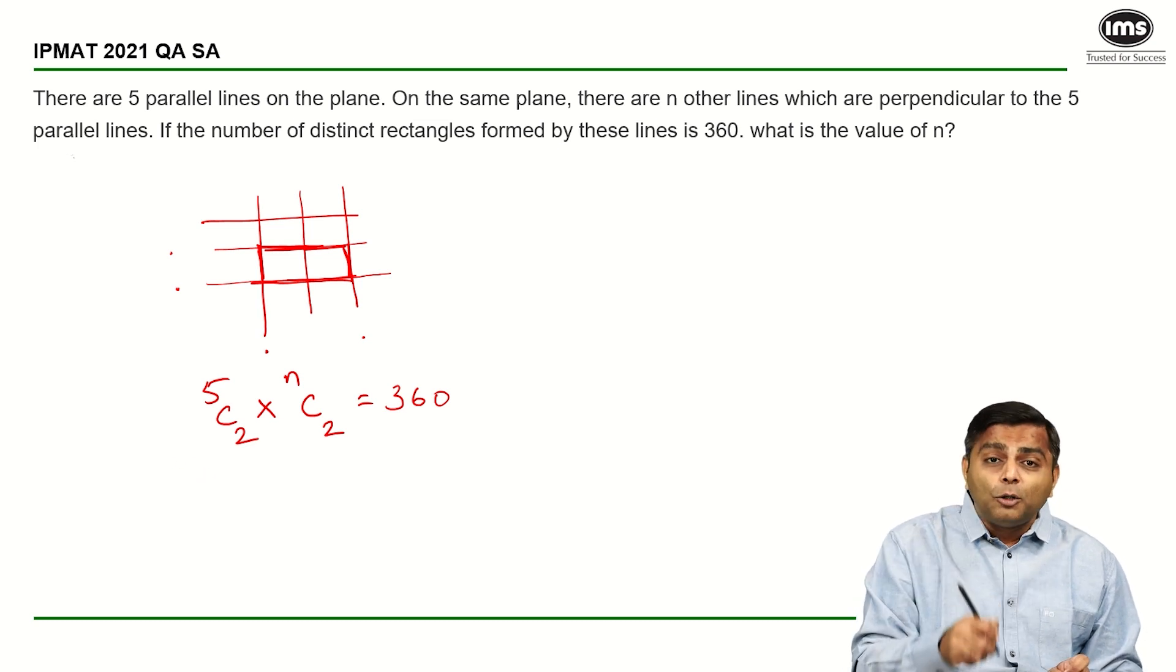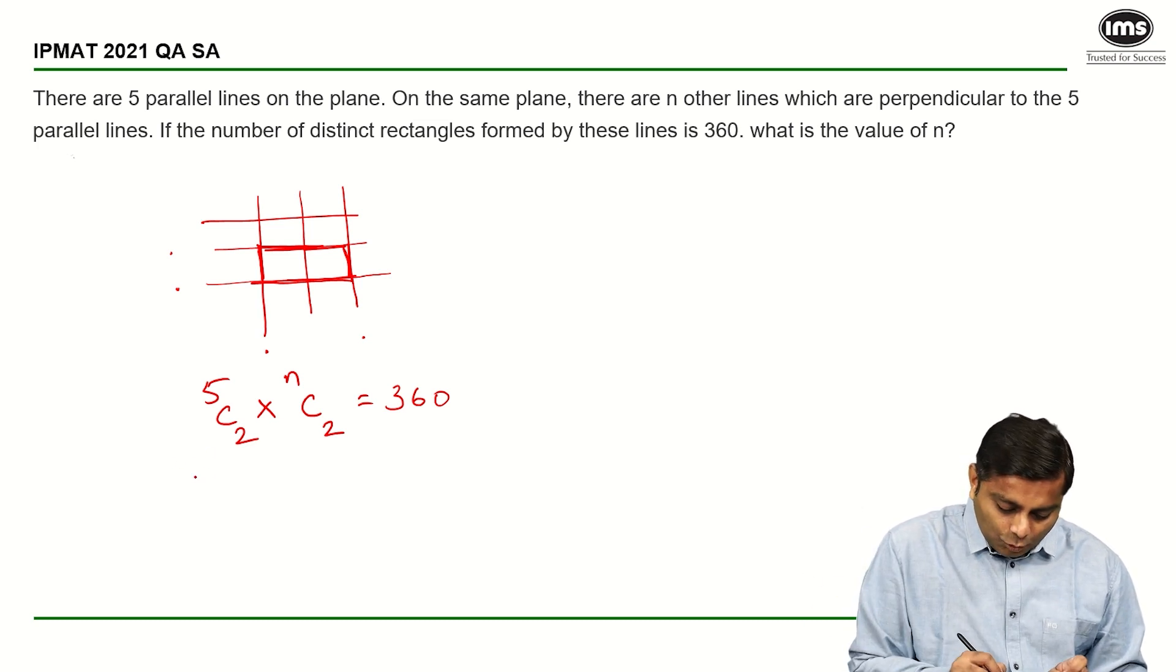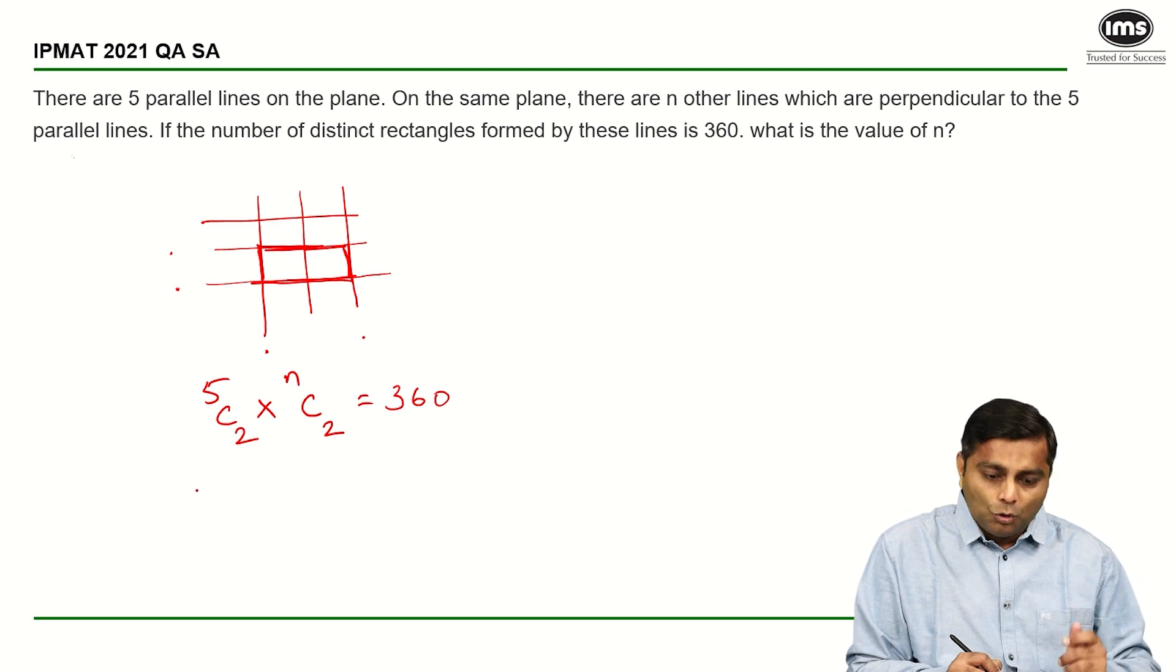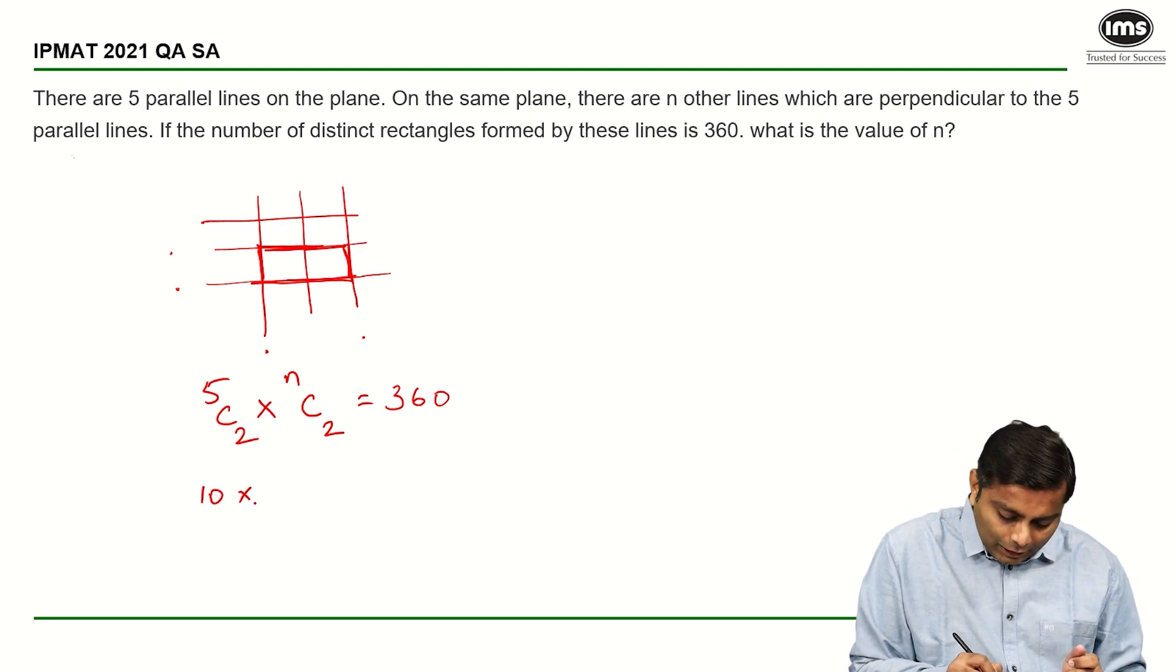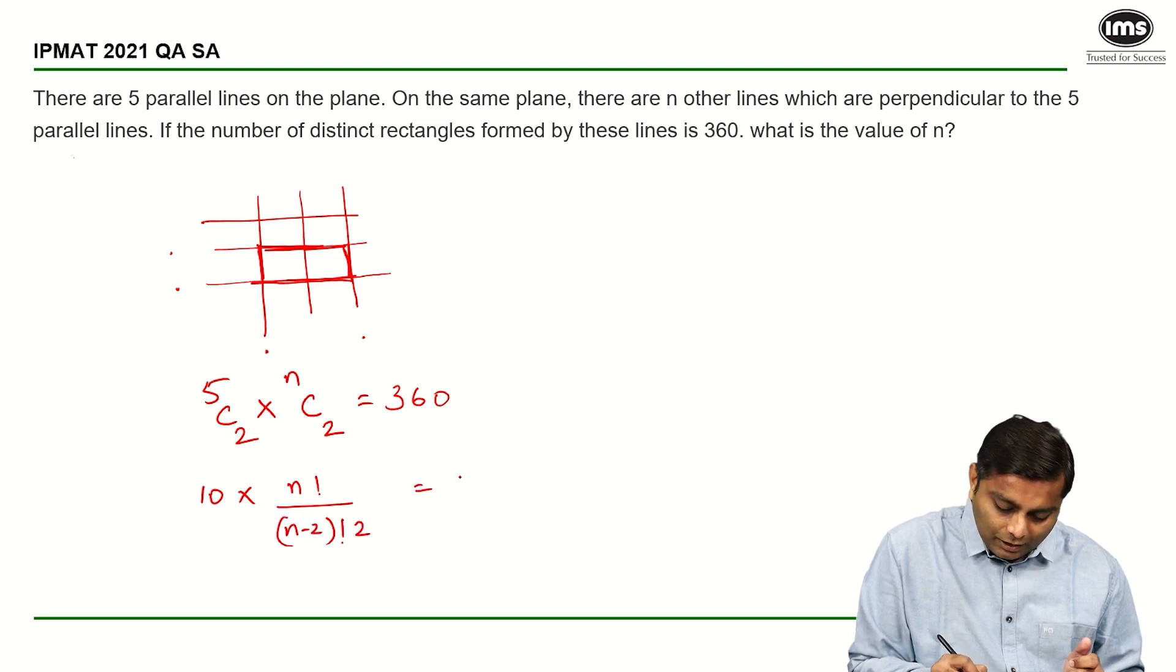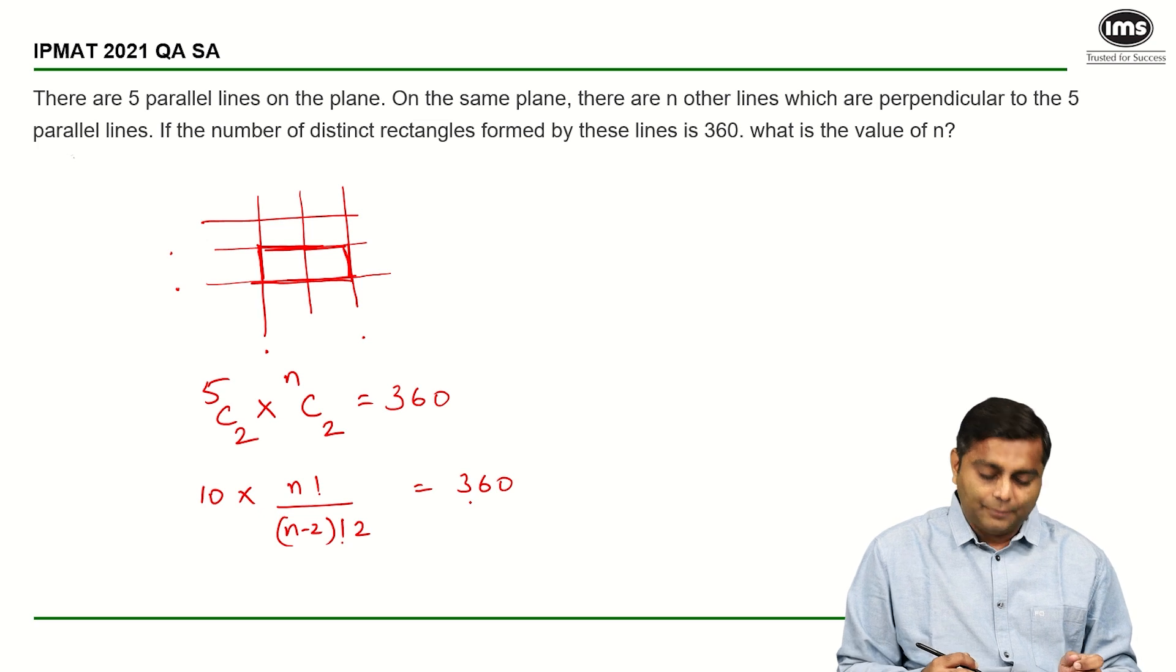It is 5 factorial upon 2 factorial, 3 factorial. So it is 5 into 4 upon 2 which is 10 into N factorial upon N minus 2 factorial into 2 factorial which is nothing but 360.